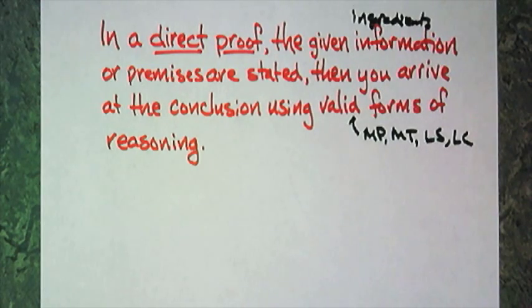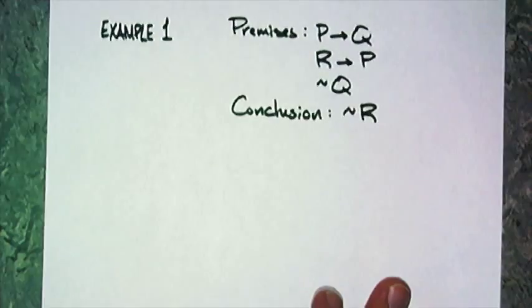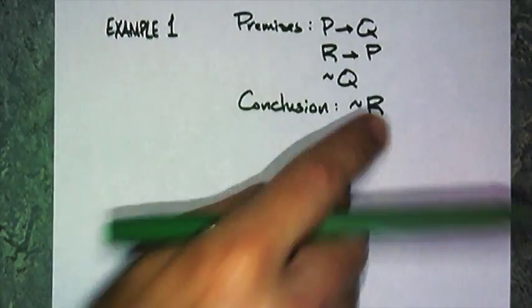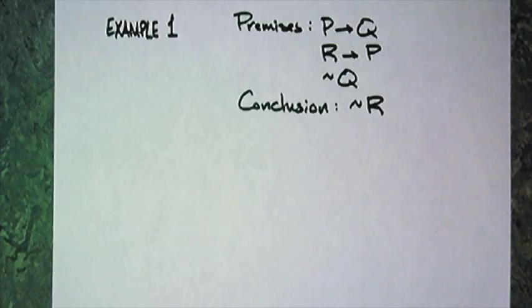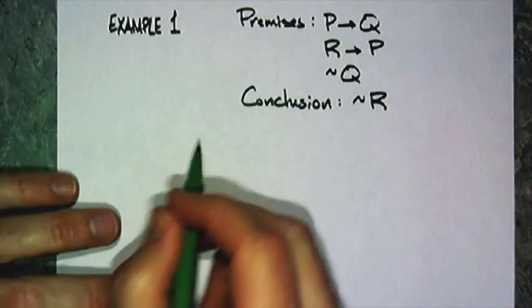Let's just do an example. I have my premises - those are my ingredients. I have my conclusion - that's where I want to go, that's my final product. And I'm going to use my tools to arrive at the conclusion.